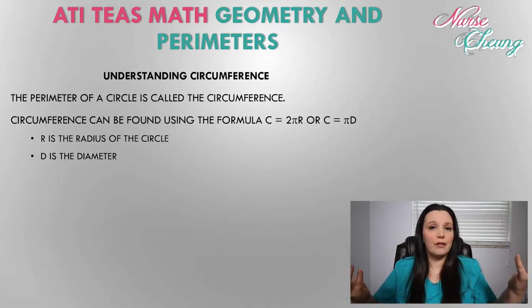Not all shapes are squares and rectangles. Some shapes are circles. How do we figure out the perimeter of a circle? Well that's called the circumference. So how do you figure out the circumference of a circle? Well there's two equations. The first equation is c is equal to 2 pi r and the second equation is c is equal to pi d.